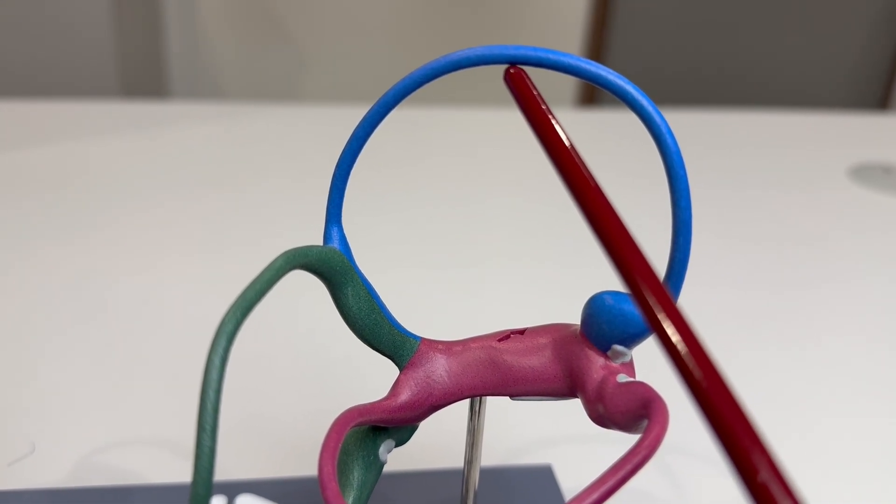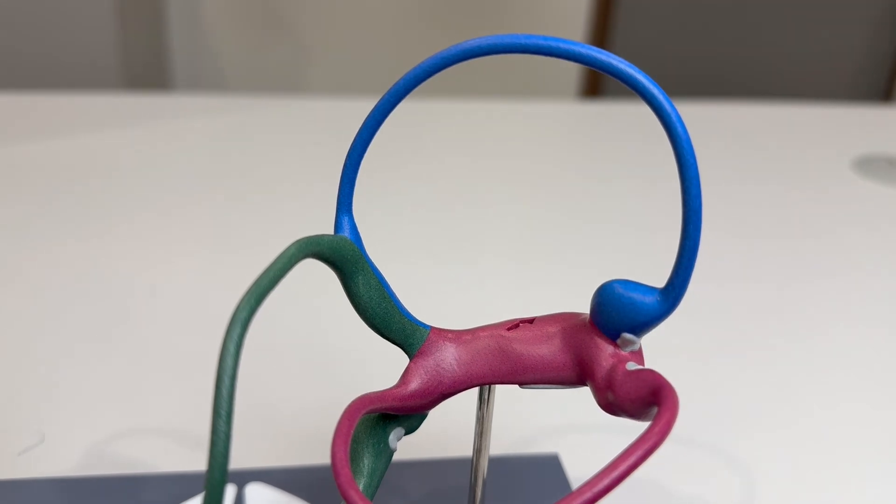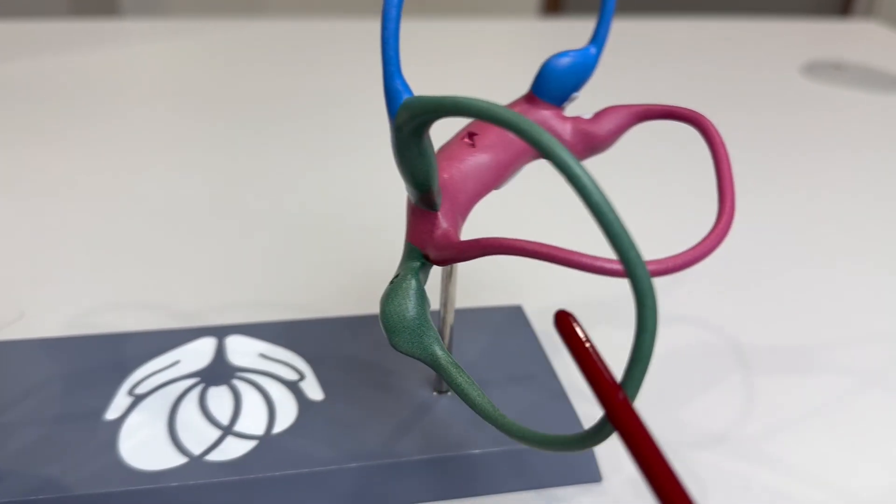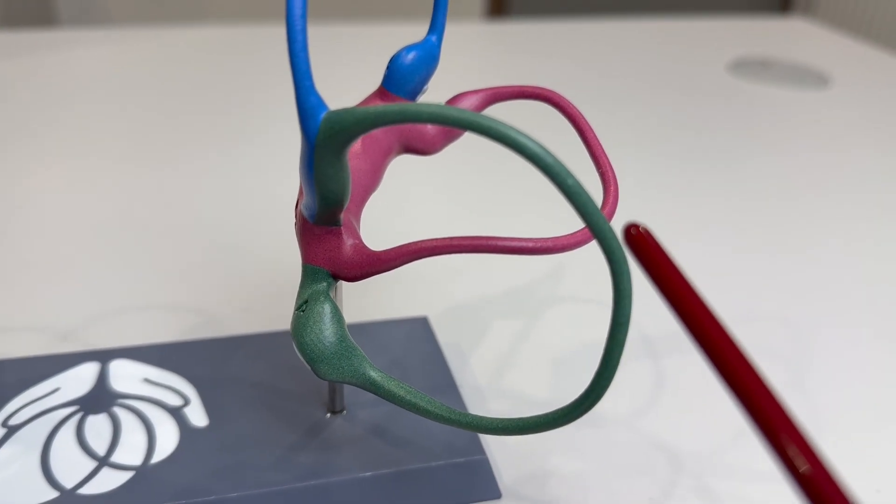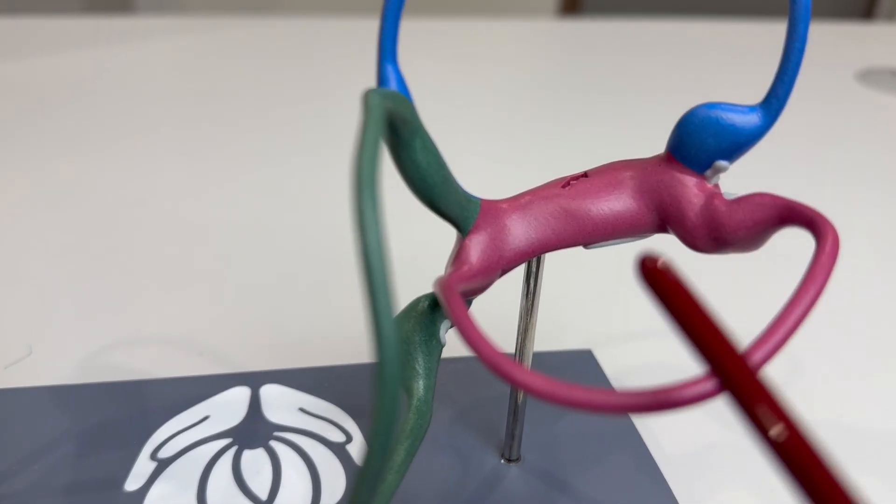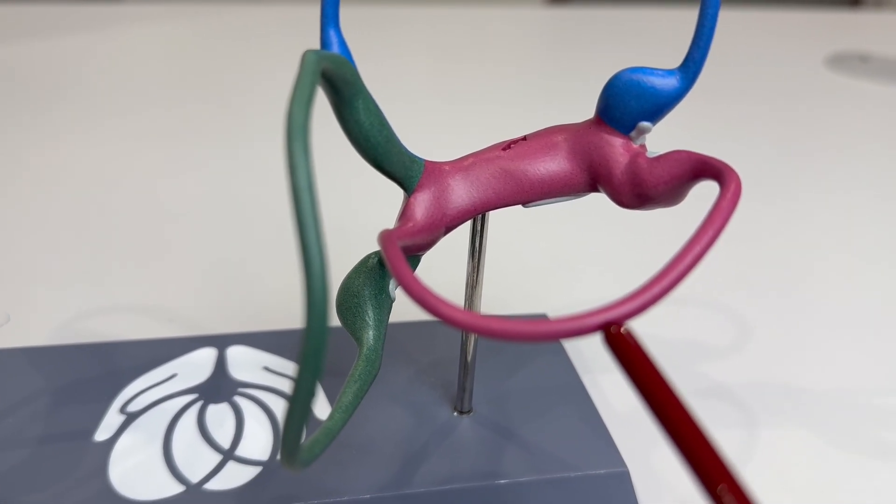Blue represents the anterior, green represents the posterior, and pink the horizontal semicircular canal.